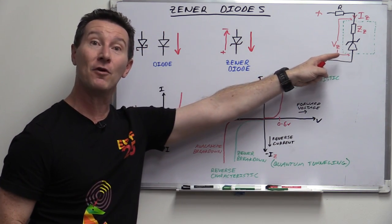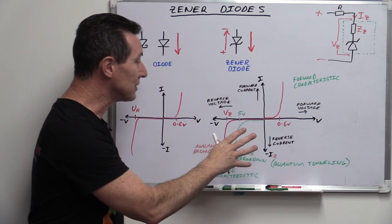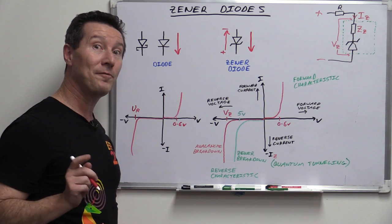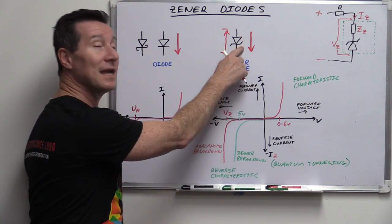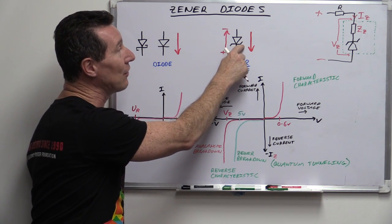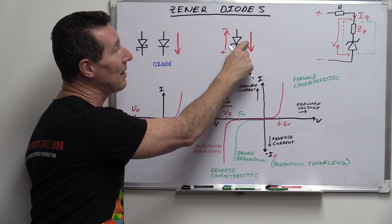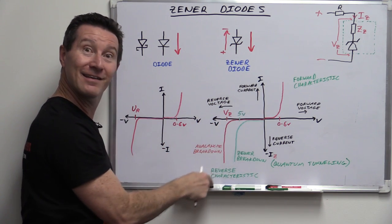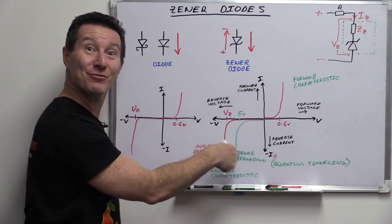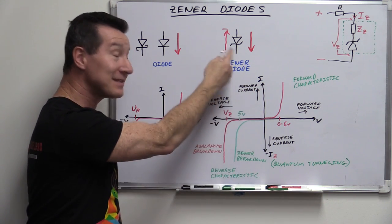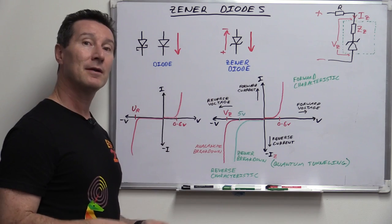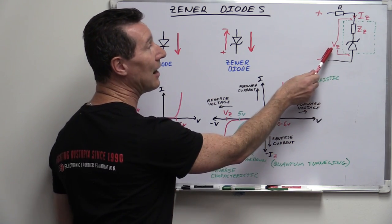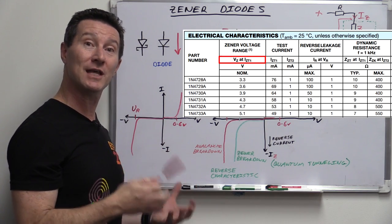So you use the Zener in the reverse bias configuration, looking at the Zener breakdown voltage. And now hopefully you can see why the Zener symbol is as it is — look how it kinks up there and kinks down there. It looks exactly like the characteristic curve. That's actually where the symbol comes from. Some typical labels you'll find on a Zener diode datasheet are VZ — the Zener voltage, the knee voltage at which it nominally happens.